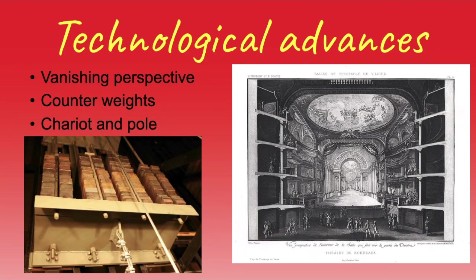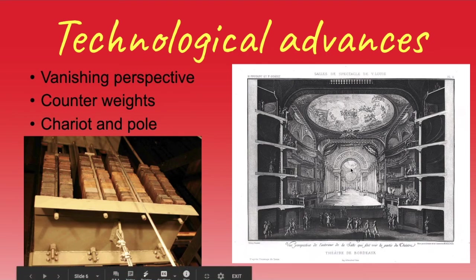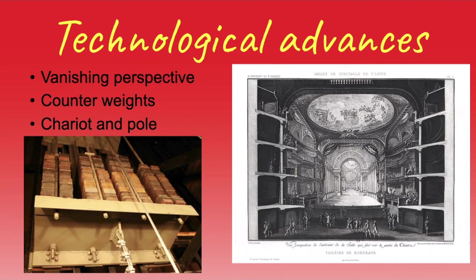One of the big things in the Italian Renaissance was the invention of new technologies. Some of this includes the vanishing perspective. Vanishing perspective is the idea that the farther away something gets, the smaller it gets — like tunnel vision. You can see in this painting and sketch how it looks like it's way deeper than it actually is. They did this through painting — they would use paintings to show vanishing perspective to make it look like the stage was really deep when it wasn't.